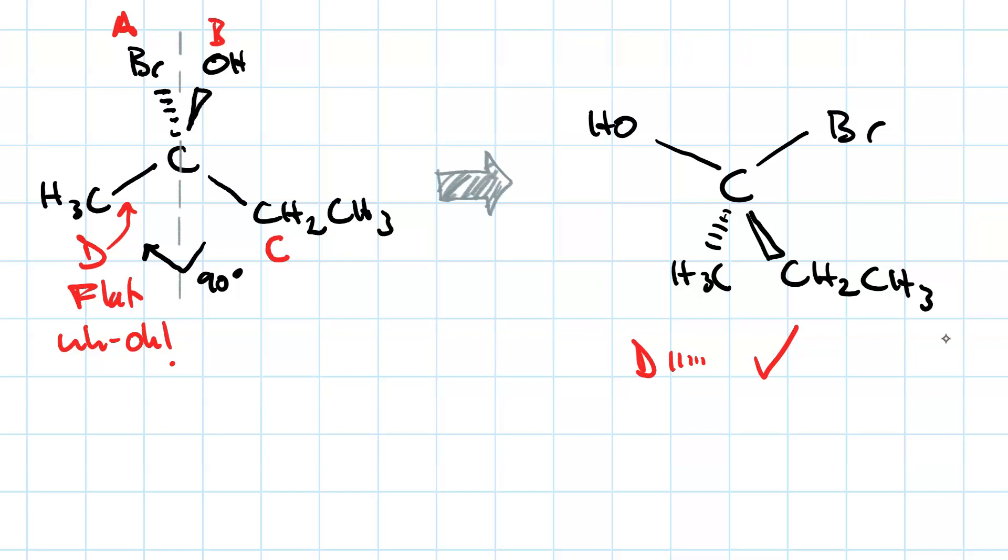Once we've got our molecule arranged like this and everything is prioritized, we draw a curved arrow that starts at the highest priority group and goes ABC. And it doesn't matter where the lowest priority group is at this point. All that matters is whether that curved arrow is clockwise or counterclockwise.